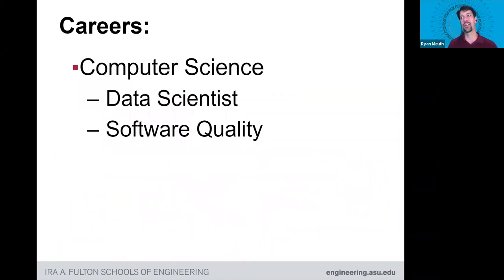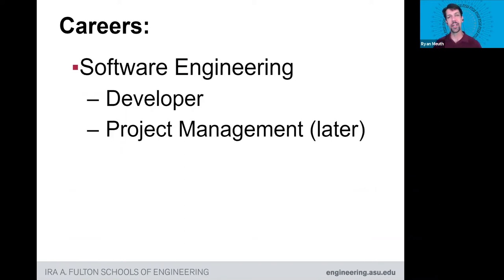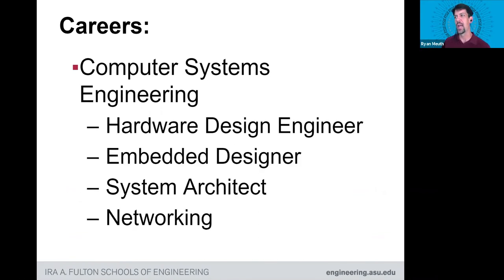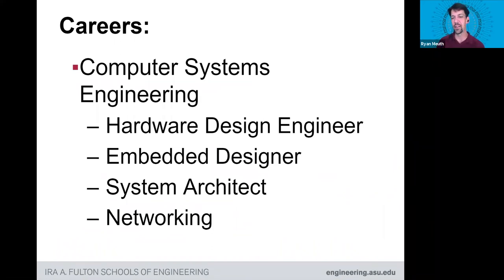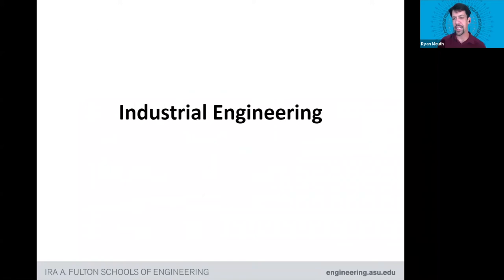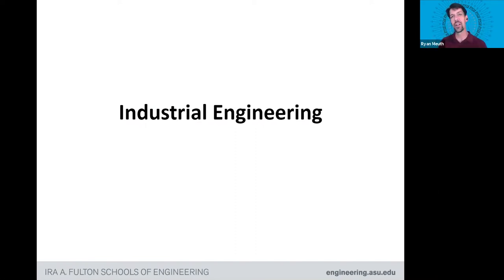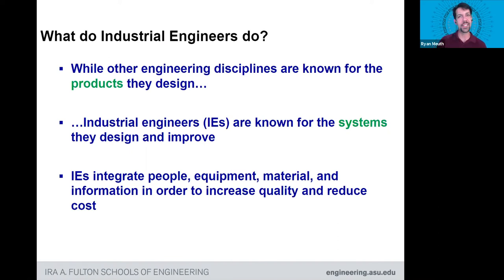Careers as a computer scientist might include data scientist or software quality assurance. In software engineering, you might hear about developers or project management further down your career. In computer systems engineering, hardware design engineer or embedded designer, with system architect as a higher-level job title. These are the sort of computing related disciplines.